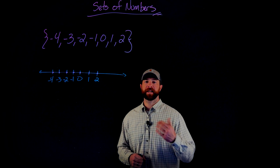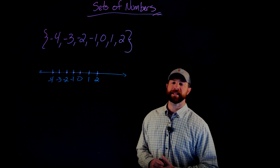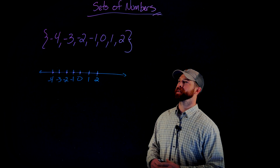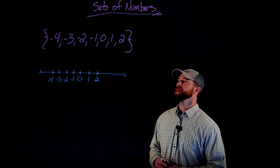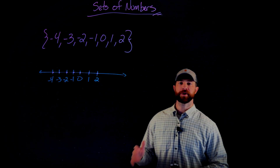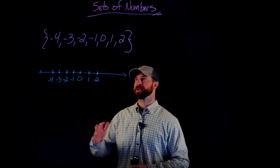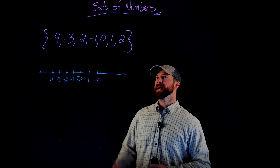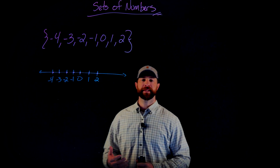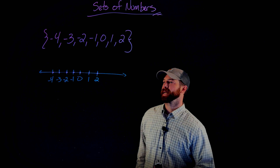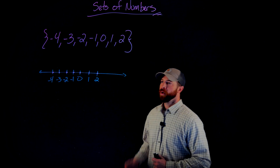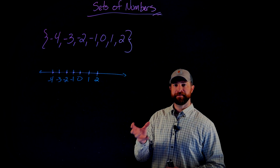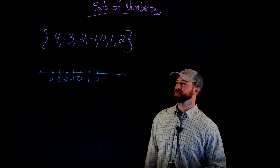Welcome back to Tryptic Algebra. Today we're talking about sets of numbers. What I have right here is a discrete set of numbers — the integers from negative 4 to 2, including negative 4 and including 2. If I want to represent this on a number line it would look like this. What I really want to get to are sets of numbers that are infinite sets of numbers.